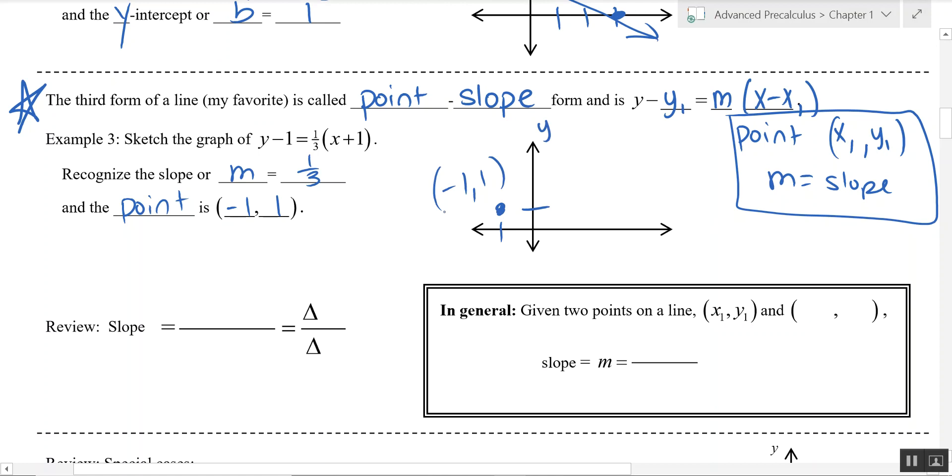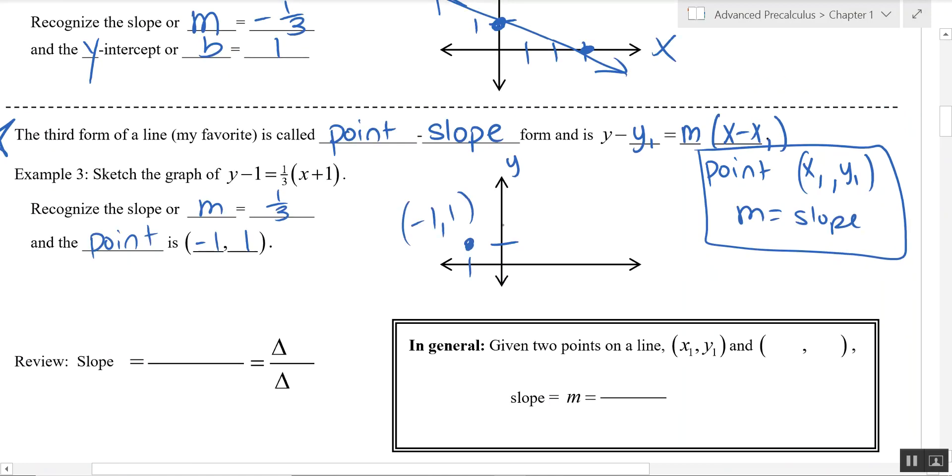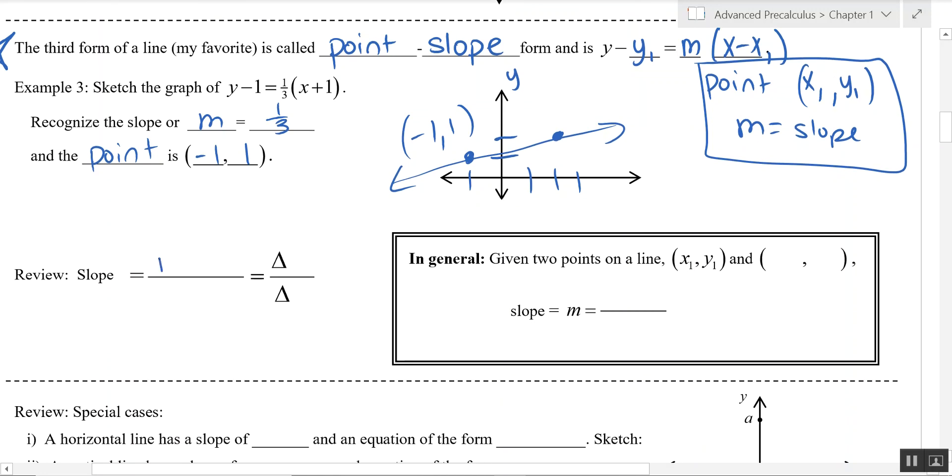And we've got a slope of 1 third, which means we go up 1 over 3. 1, 2, 3. And we've got another point. And the line that goes through is our equation. And again, just to make sure you recognize rise over run. Delta y over delta x, meaning change in y over change in x.